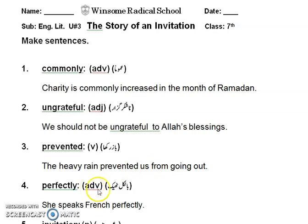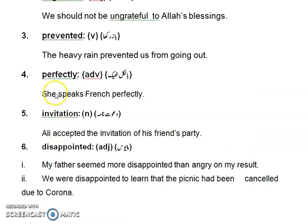Number 4, 'perfectly', is also an adverb in part of speech. Its Urdu meaning is 'bilkul thik'. The sentence is: She speaks French perfectly. Urdu: Woh French bilkul thik bolti hai.